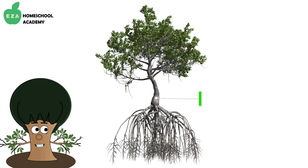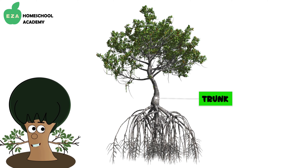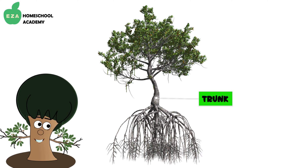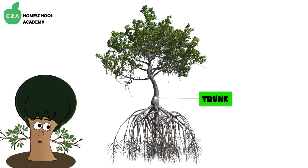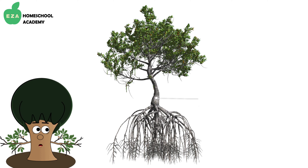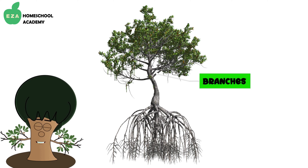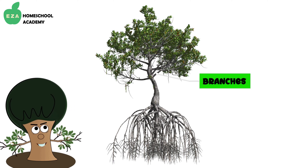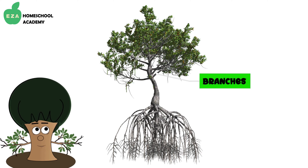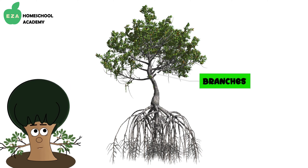The trunk is the main body of the tree. The trunk is covered with bark, which protects it from damage. Branches grow from the trunk. They spread out much like the roots so that the leaves can get more sunlight.